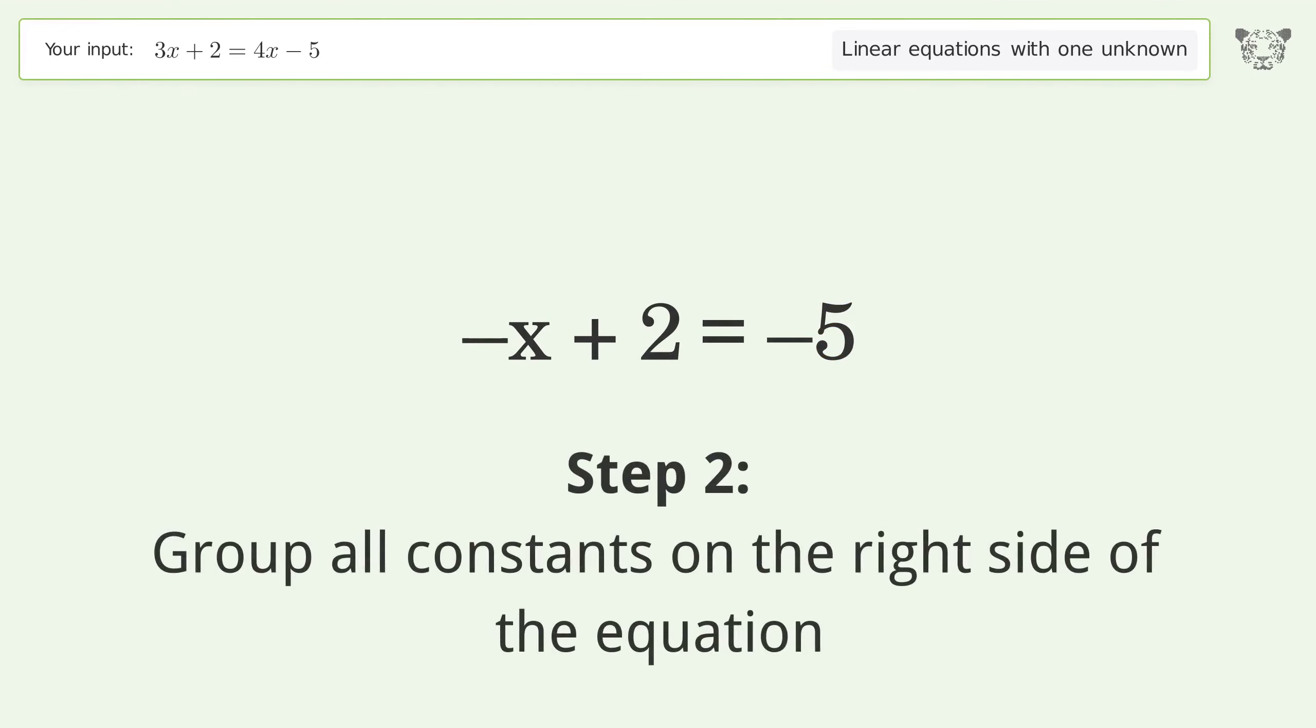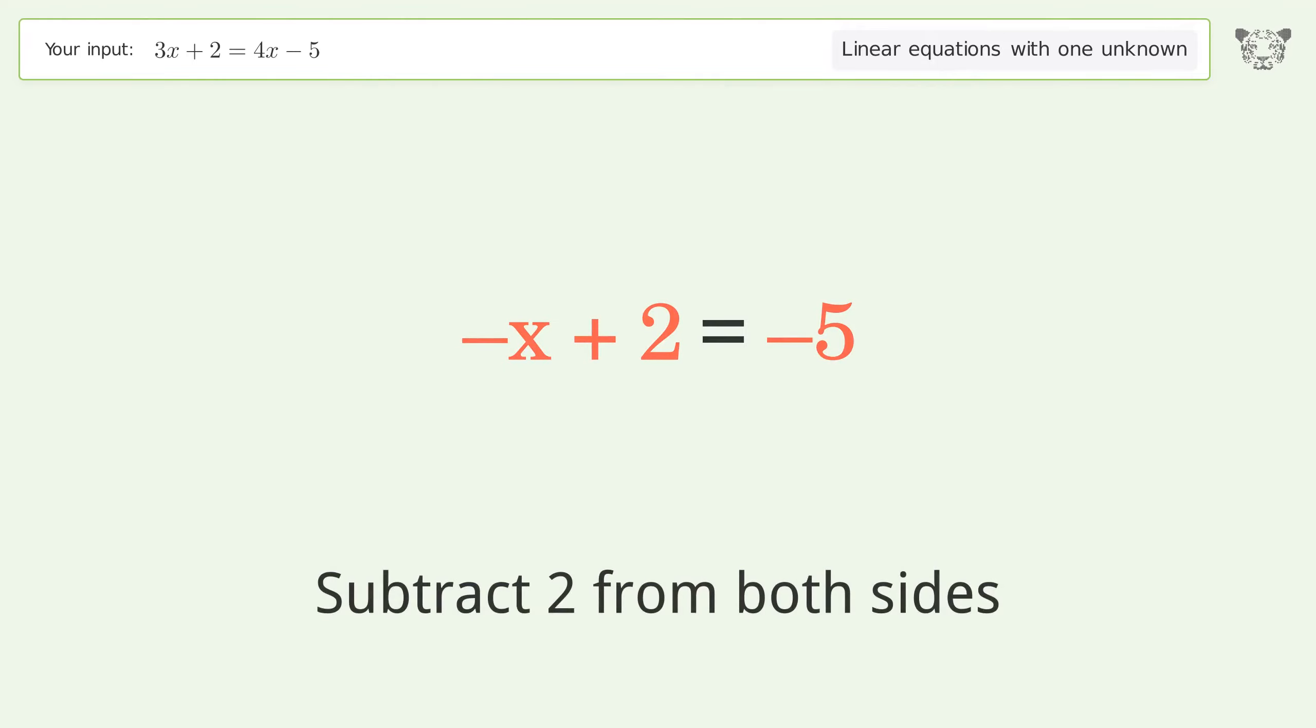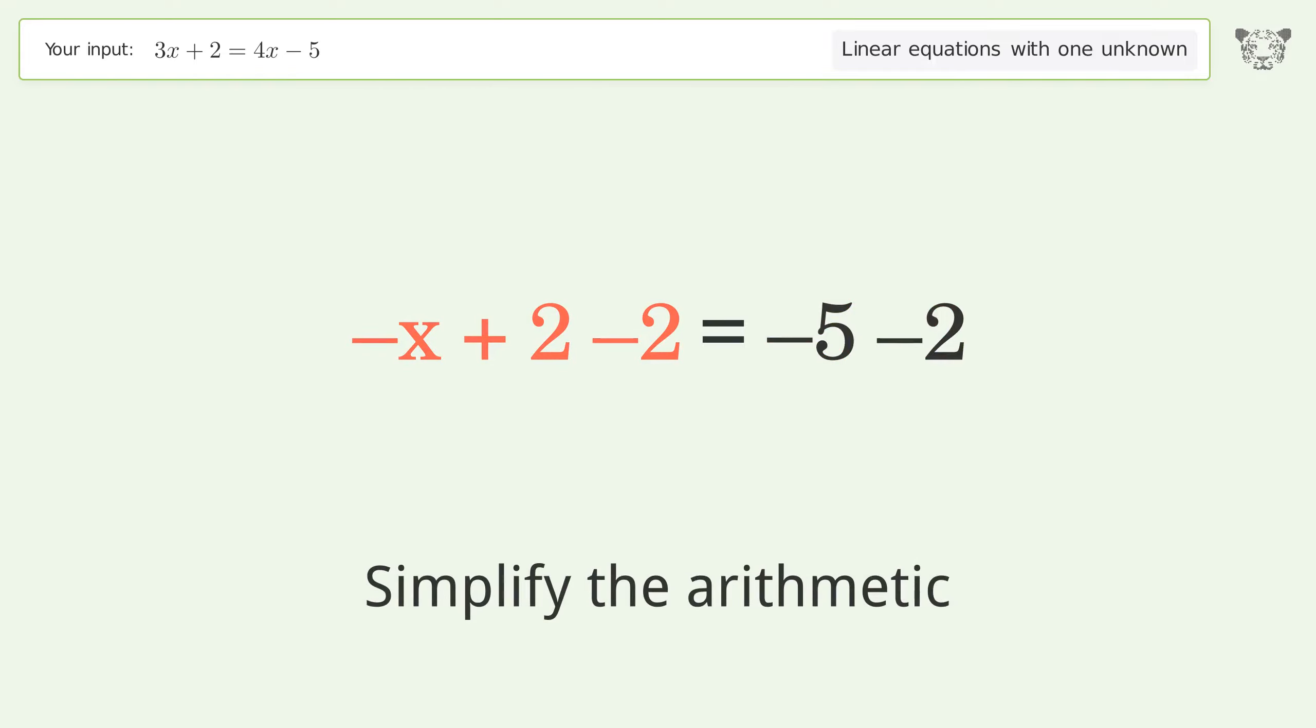Group all constants on the right side of the equation. Subtract 2 from both sides. Simplify the arithmetic.